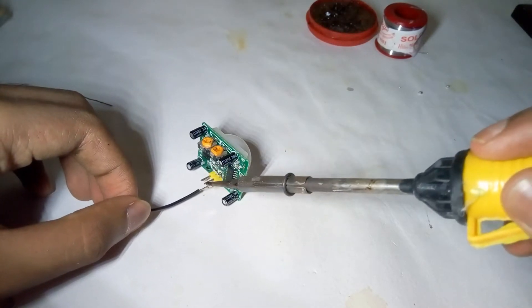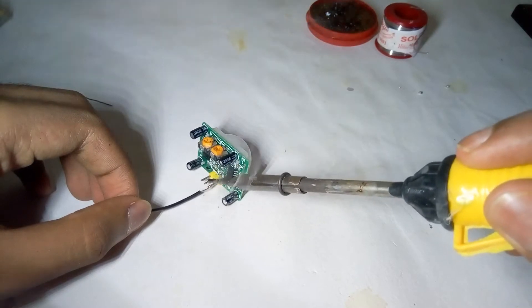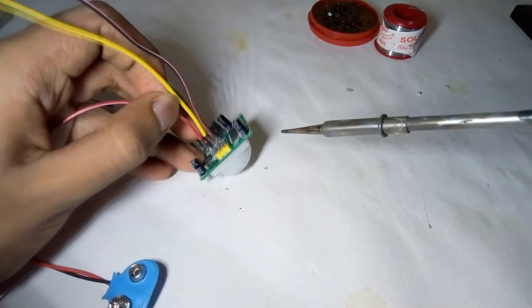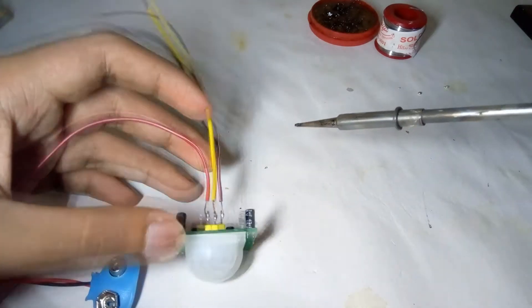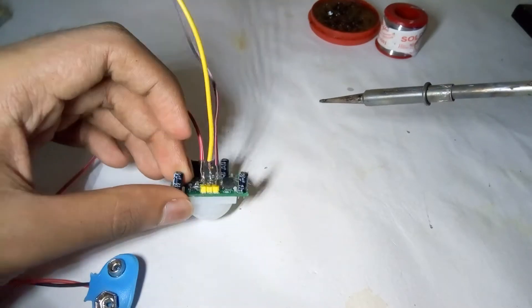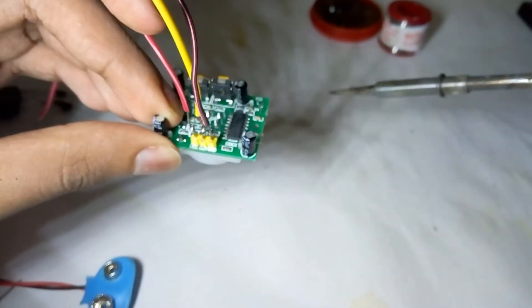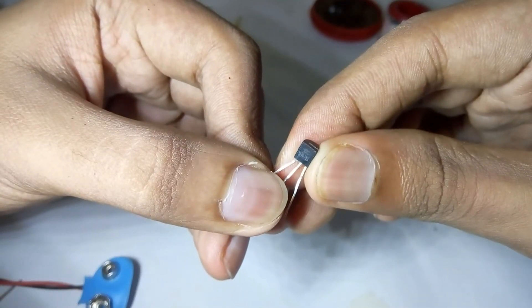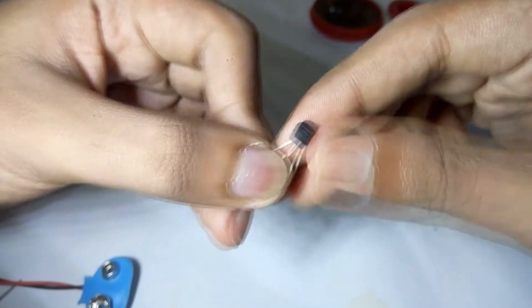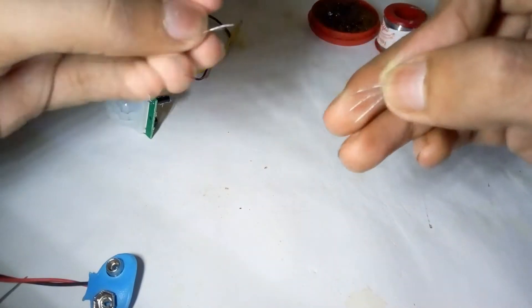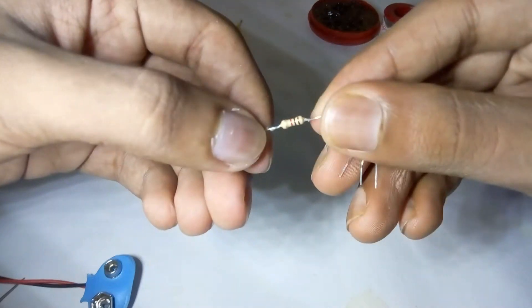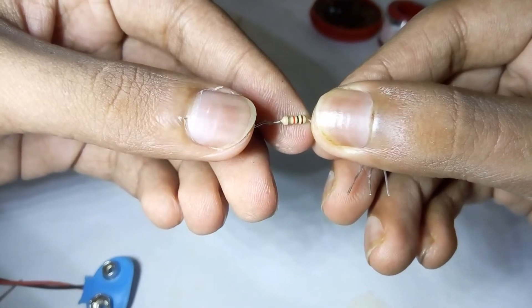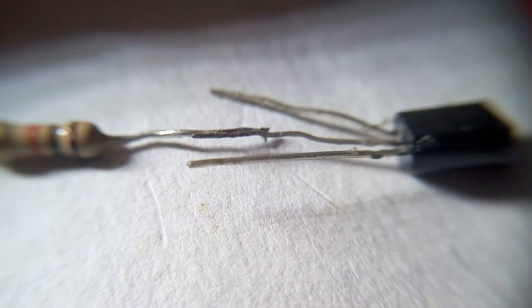I've completed the PIR connections. Now we have transistor BC 547 and I'm going to connect it with a 1k resistor. This is a 1k resistor, so connect it to the center leg of the transistor as shown.